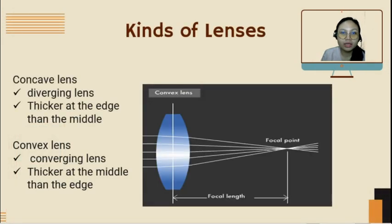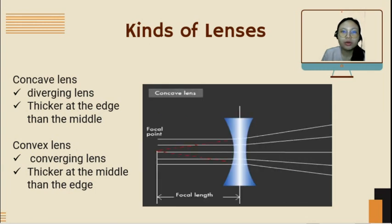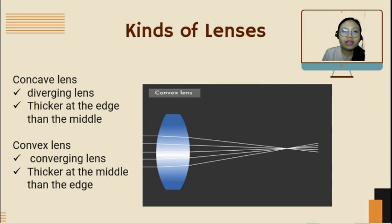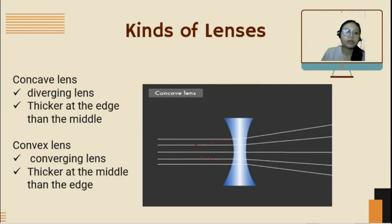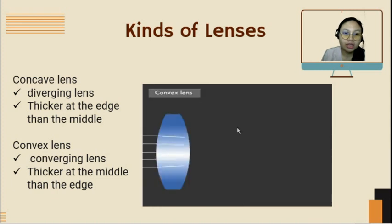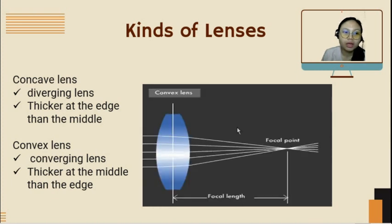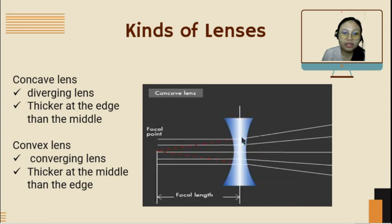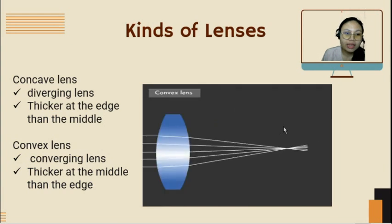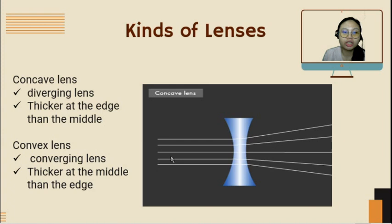We have two kinds of lenses, just like mirrors: concave lens and convex lens. A concave lens curves inward — it has a thicker edge and a thinner middle part. It is a diverging lens. A convex lens is thicker at the middle and it is a converging lens.